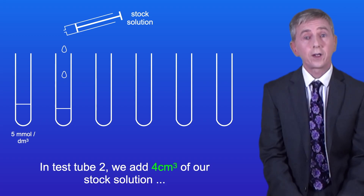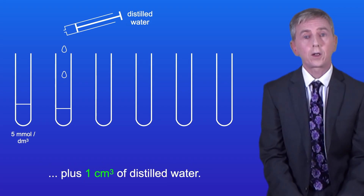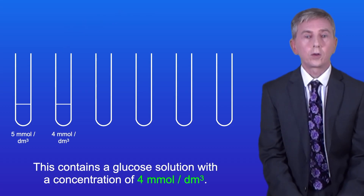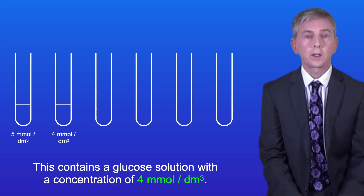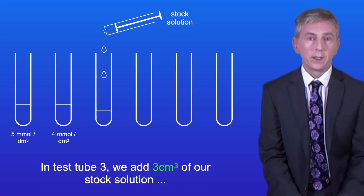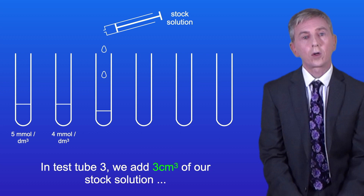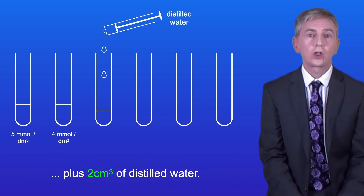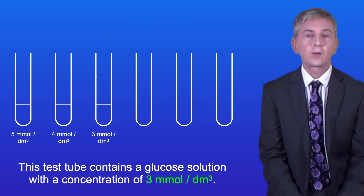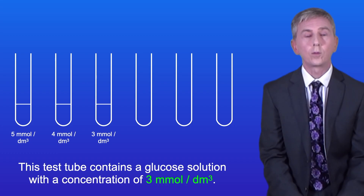In test tube 2, we add 4 centimeters cubed of our stock solution plus 1 centimeter cubed of distilled water, giving a glucose concentration of 4 millimoles per decimeter cubed. In test tube 3, we add 3 centimeters cubed of our stock solution plus 2 centimeters cubed of distilled water, giving a concentration of 3 millimoles per decimeter cubed.